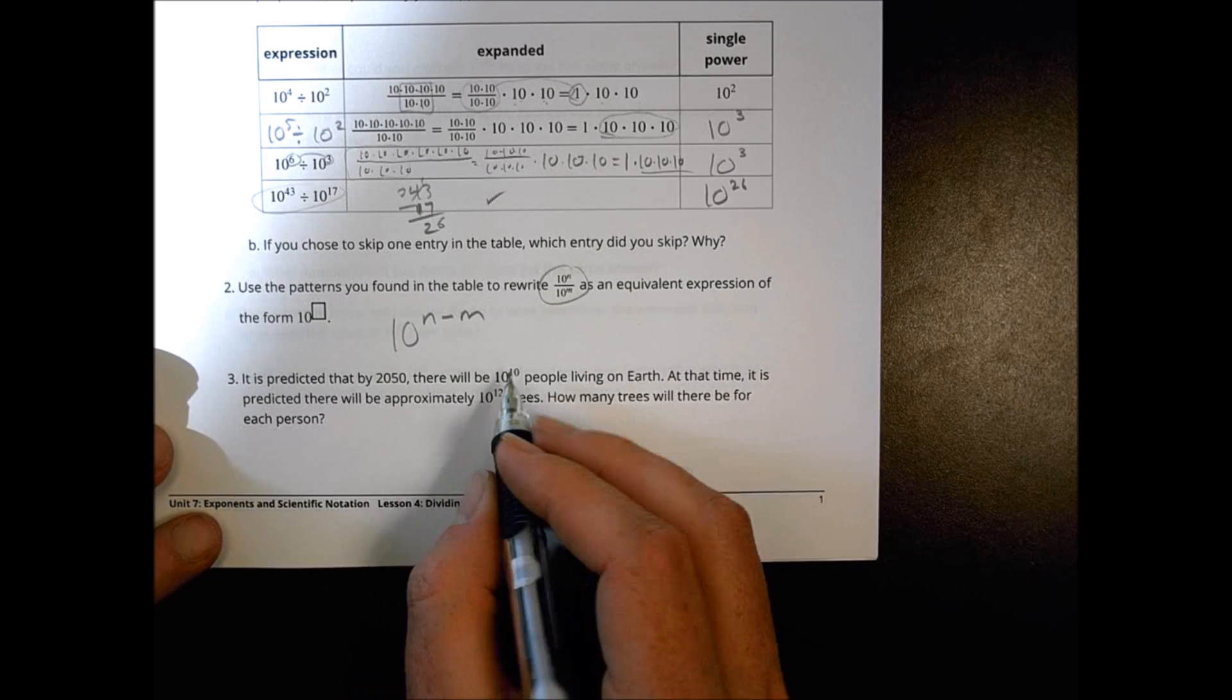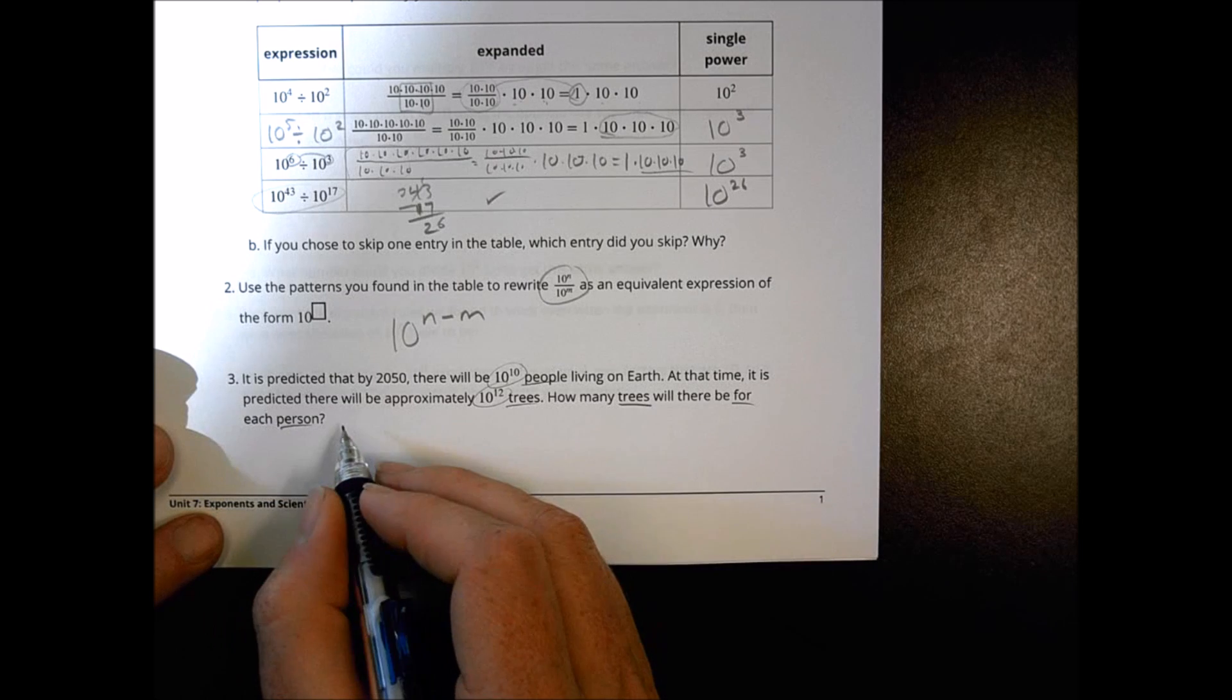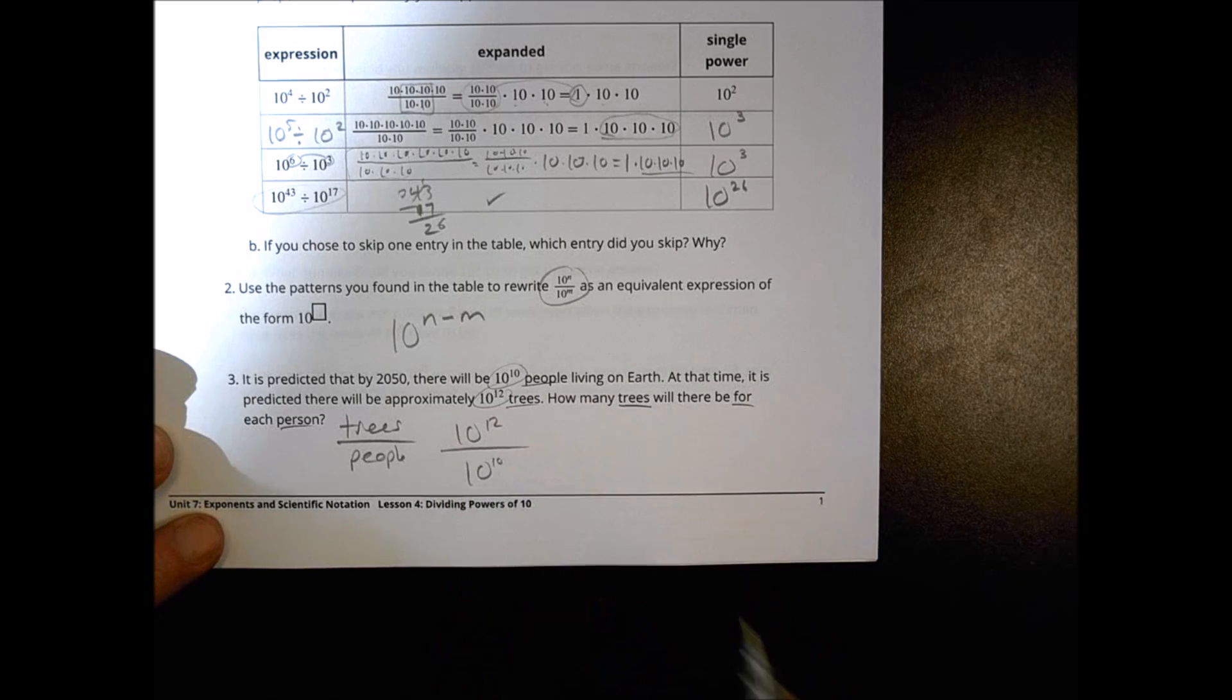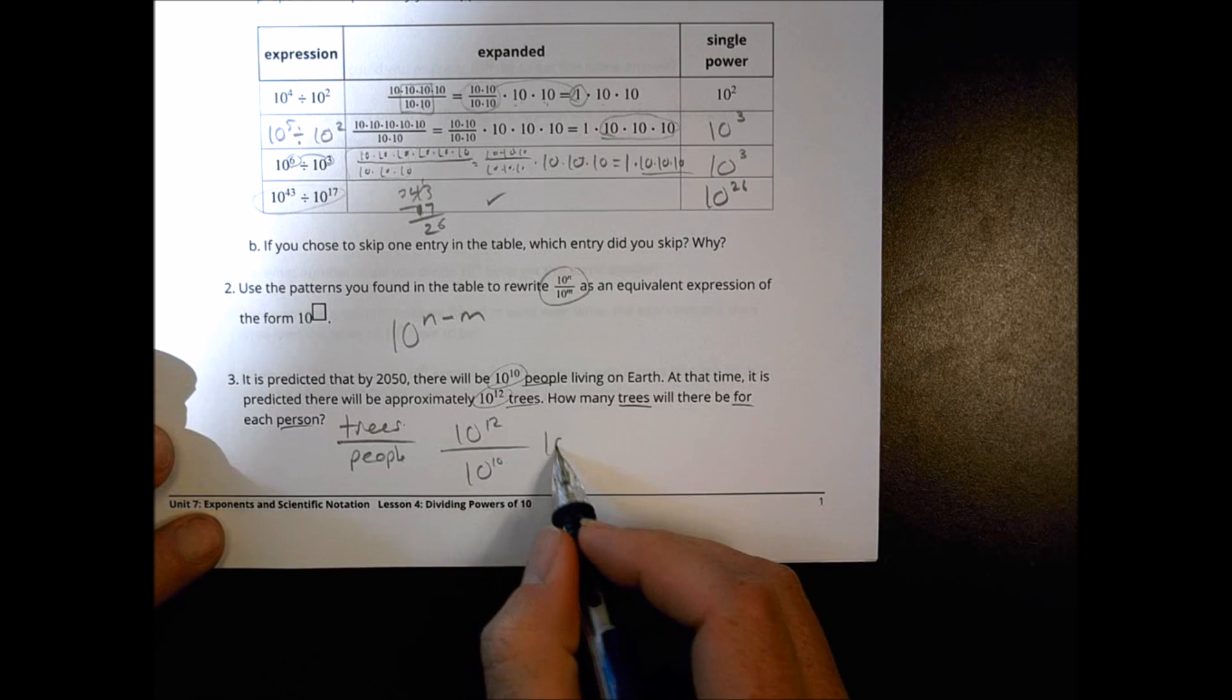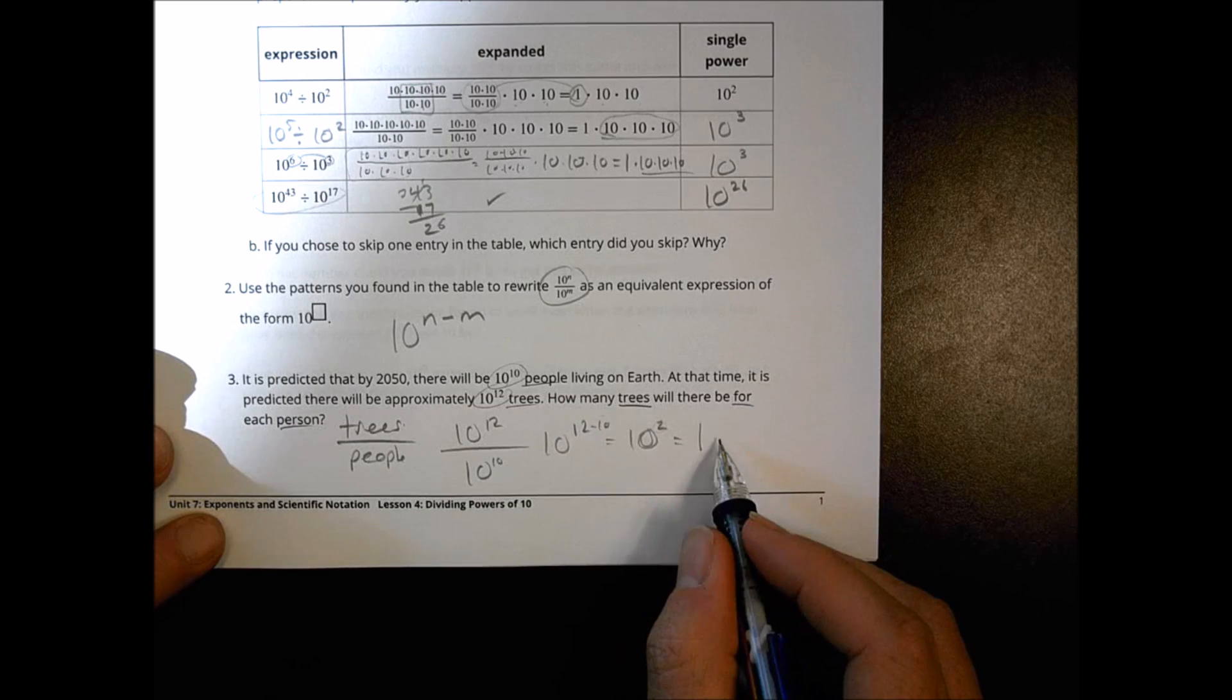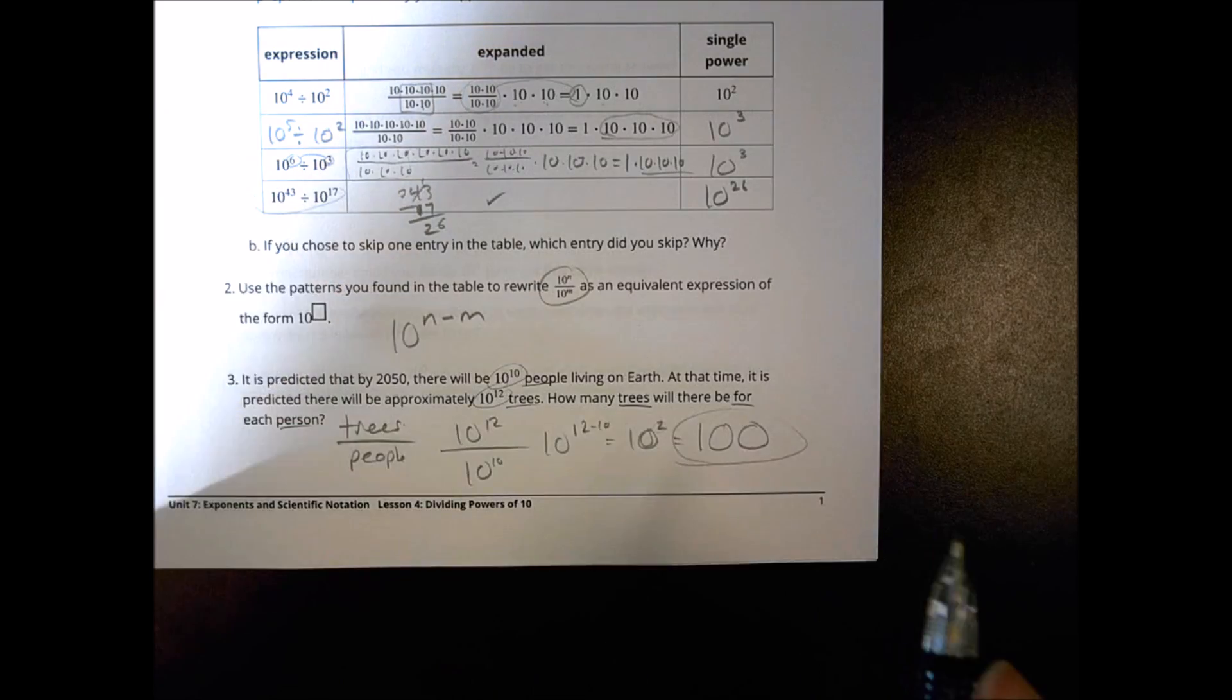It's predicted by 2050, there will be ten to the tenth power of people on Earth, and ten to the twelfth power of number of trees. How many trees for persons? So we're going to do trees over people. So the tree is ten to the twelfth, and the people are ten to the tenth. We do twelve minus ten, so ten to the twelve minus ten power is ten to the second. And when it's the base ten, that tells you how many zeros to put after the one. So we're going to put two zeros after the one. So there will be one hundred trees for every single person at that time on Earth.